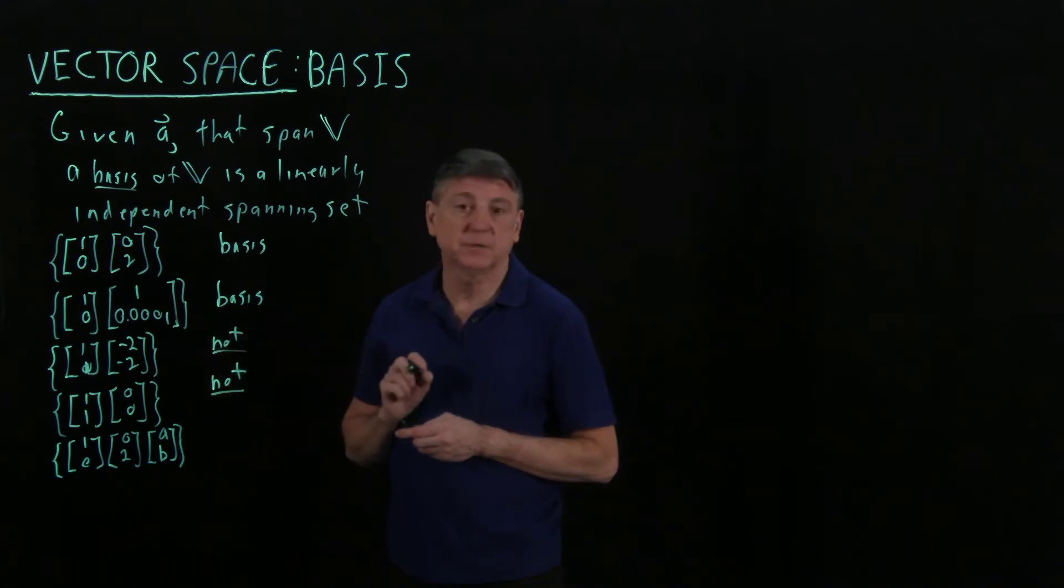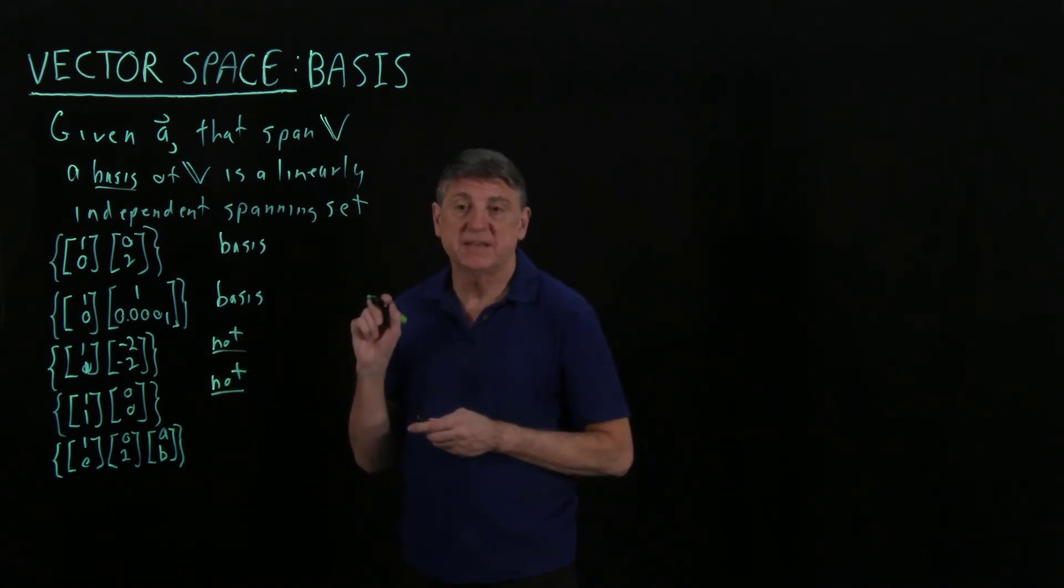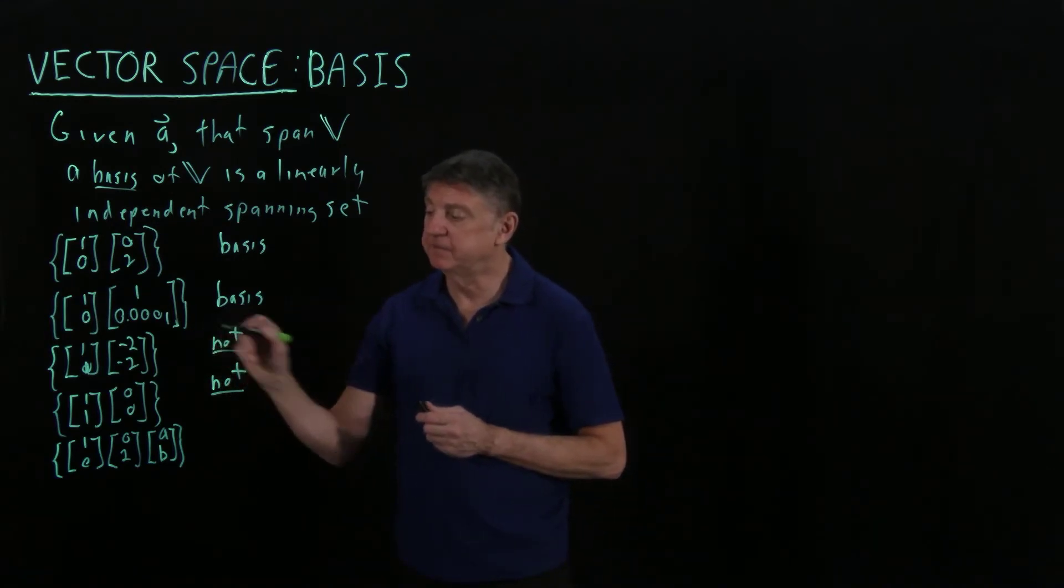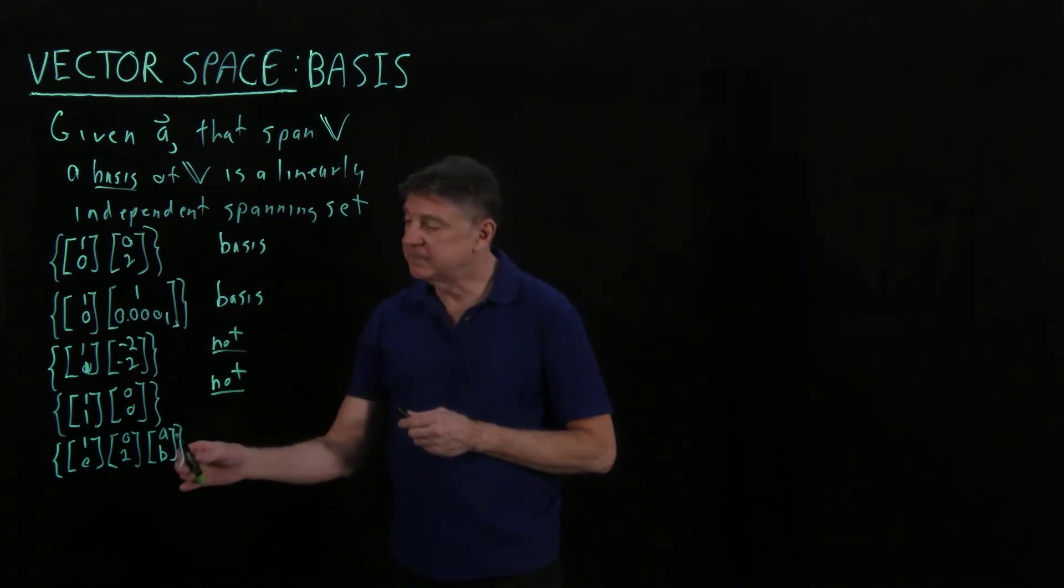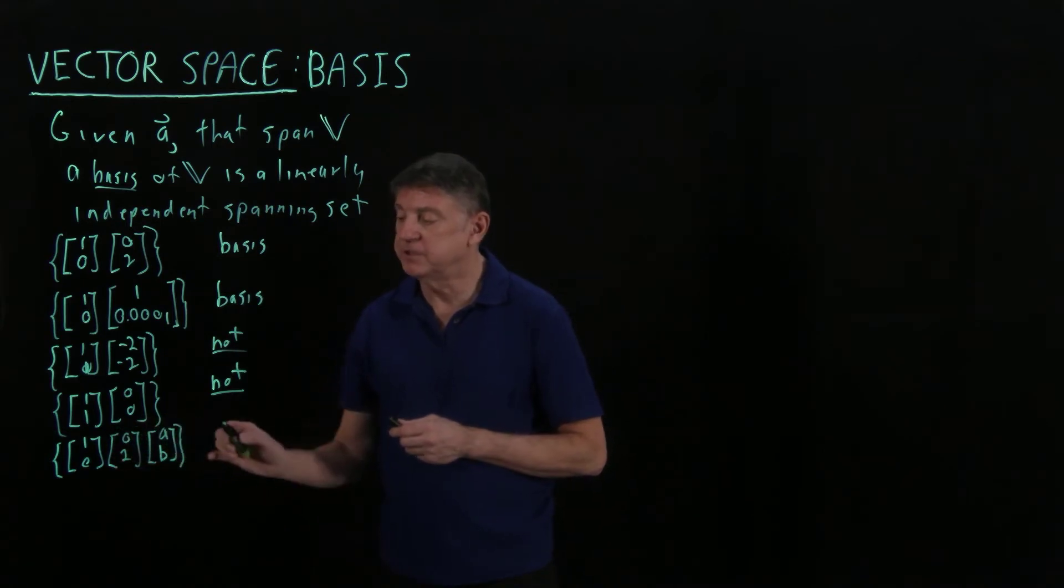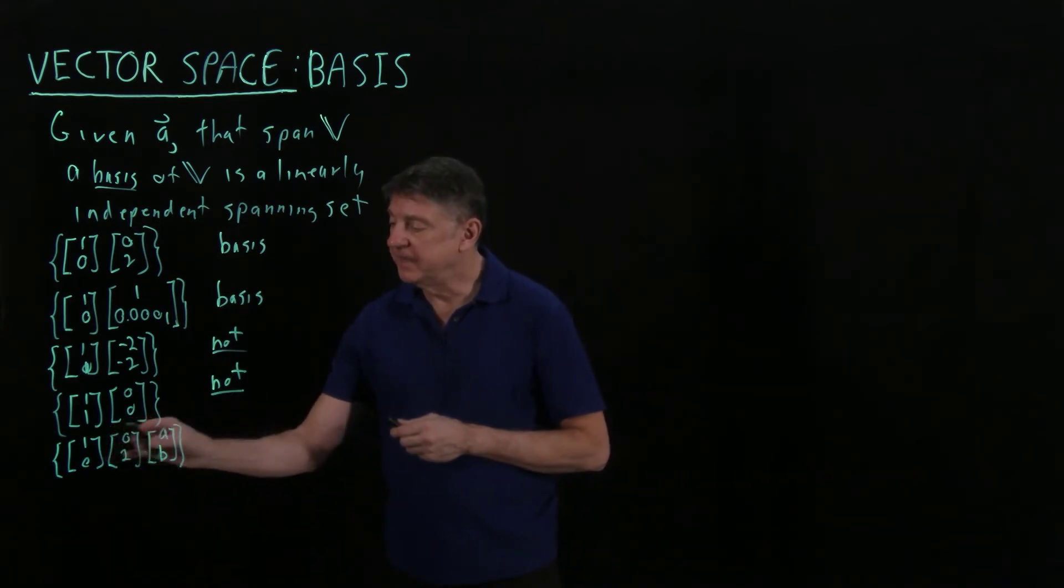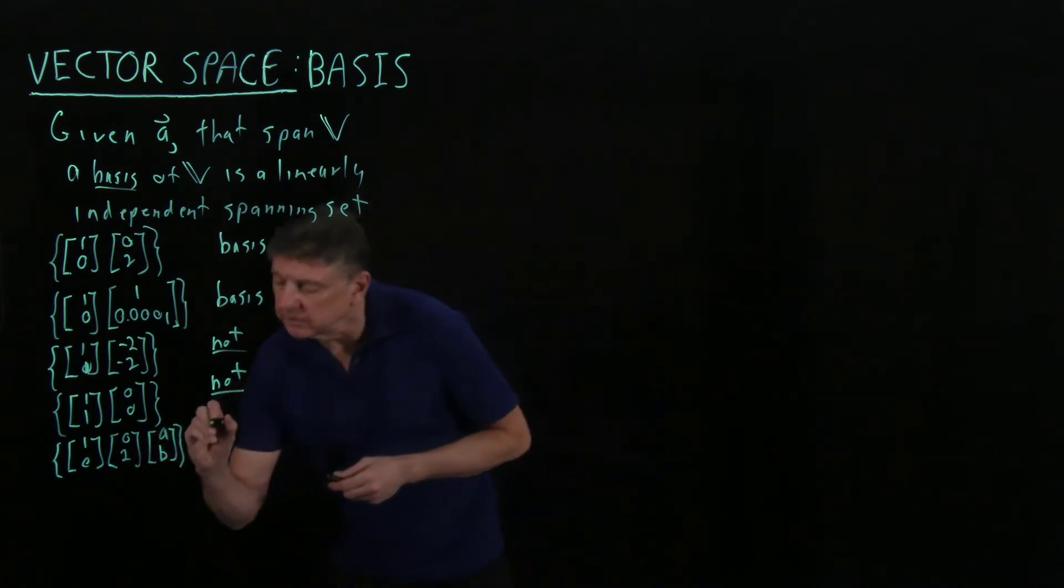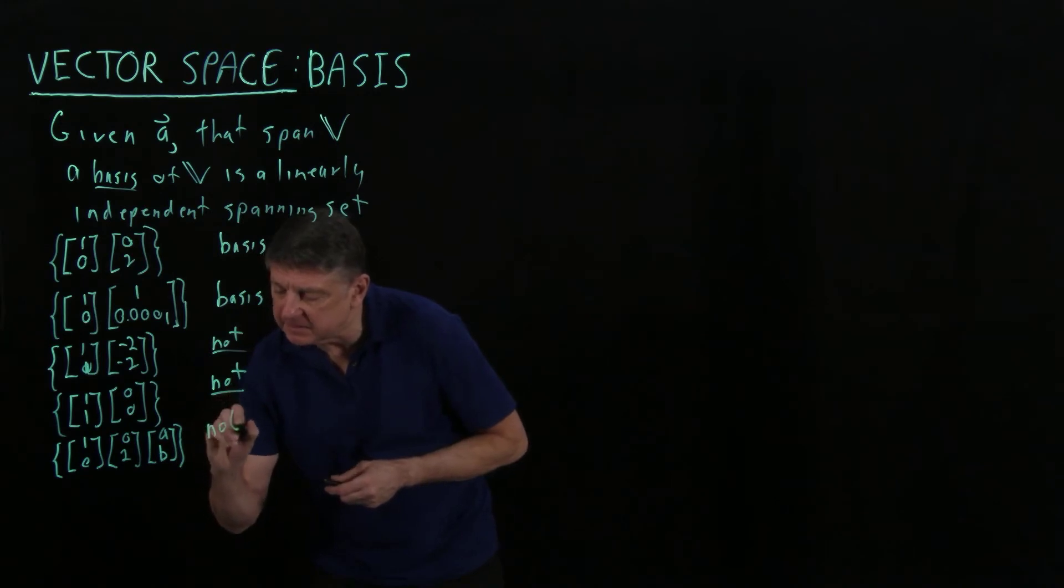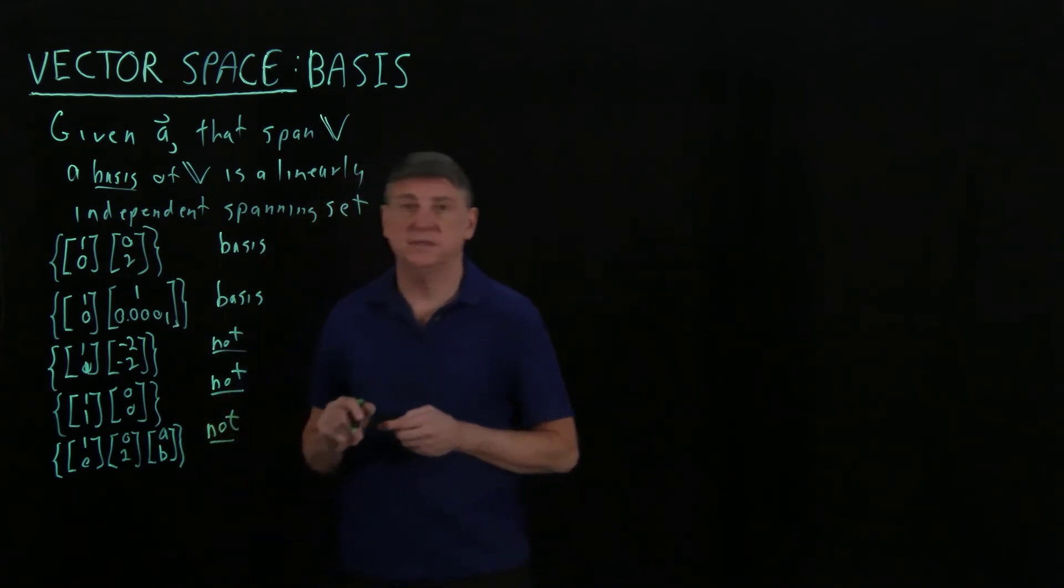This is a spanning set, but I can see that I could construct this as a linear combination of these two. I could say that if I take A times this vector plus 1 half B times this vector, I get the third vector. So those are linearly dependent, and they are not a basis.